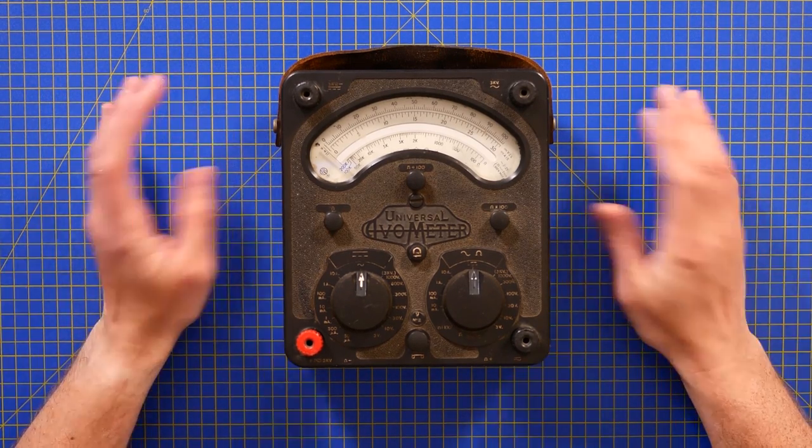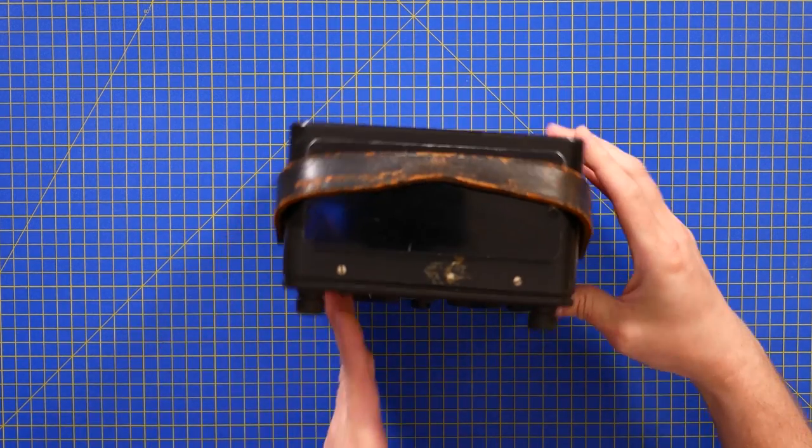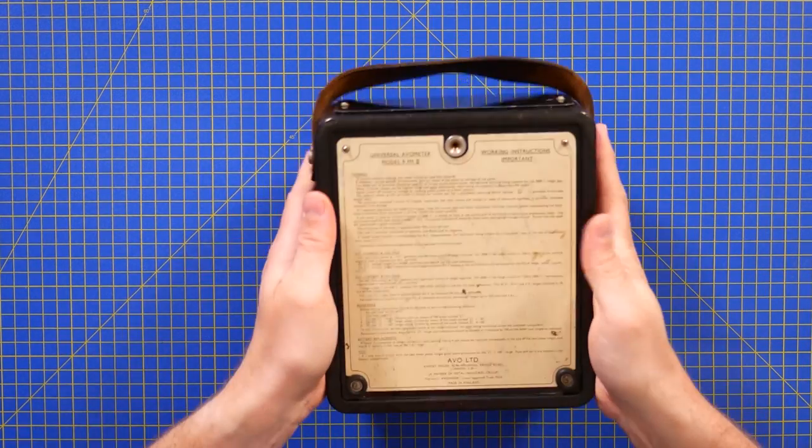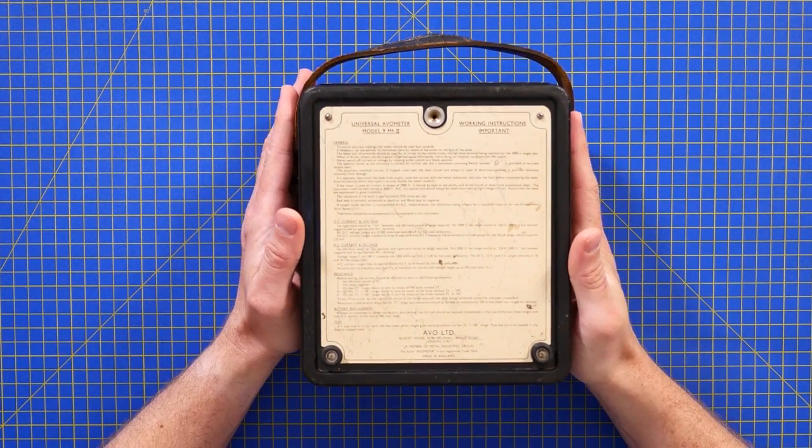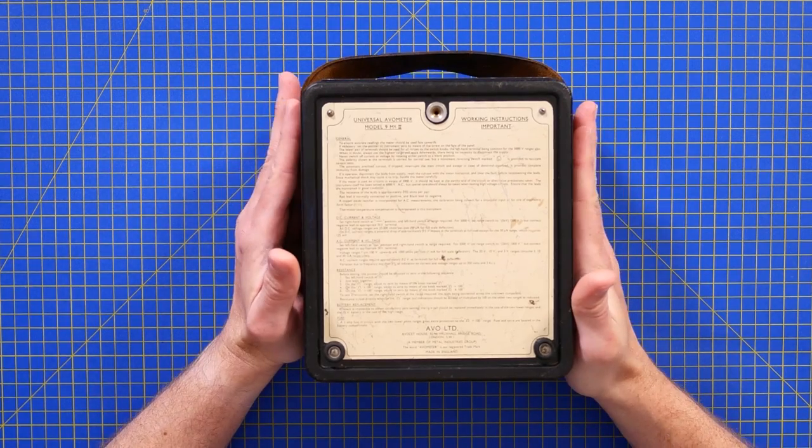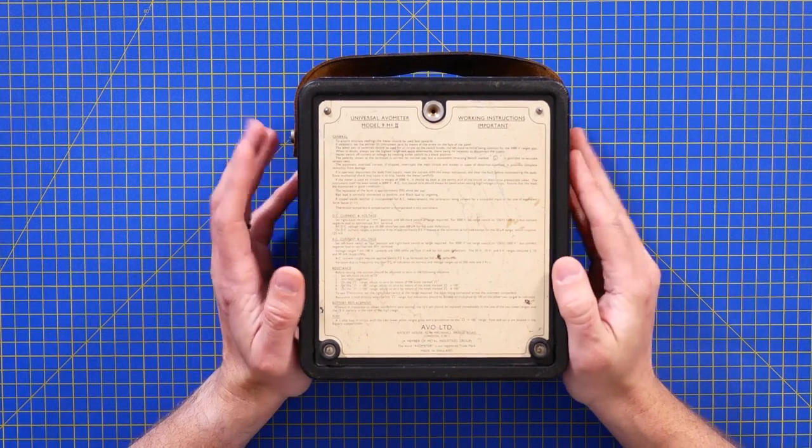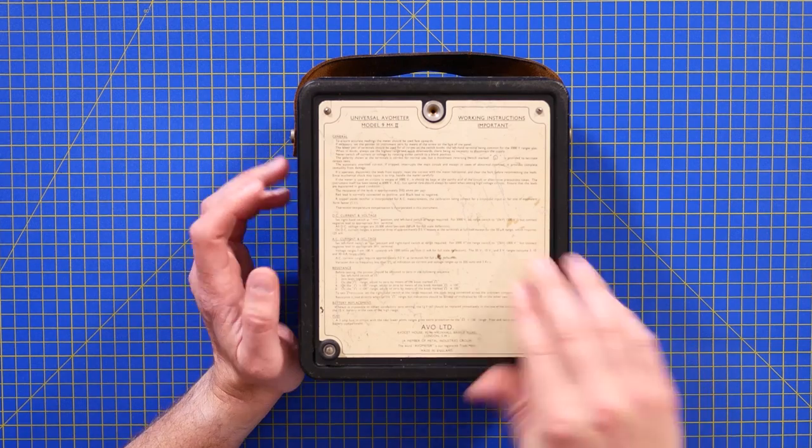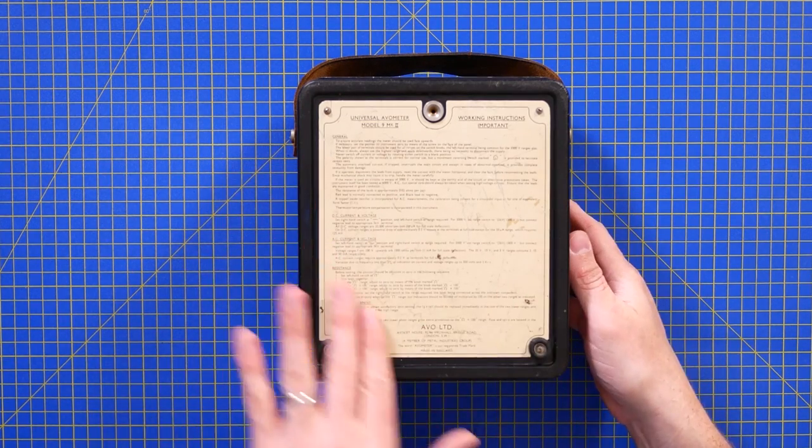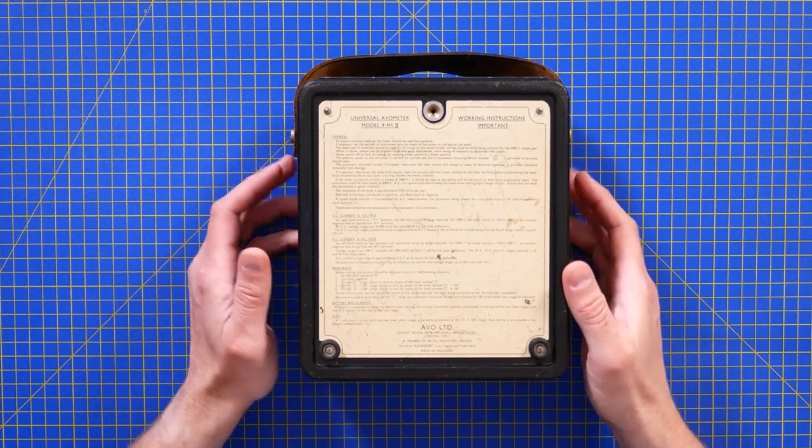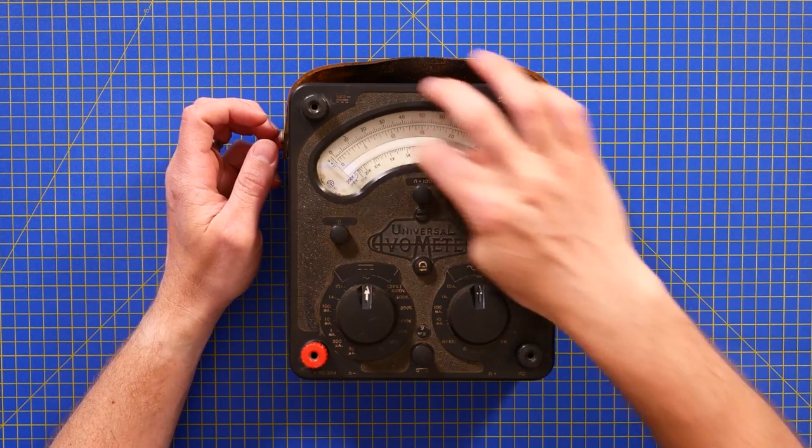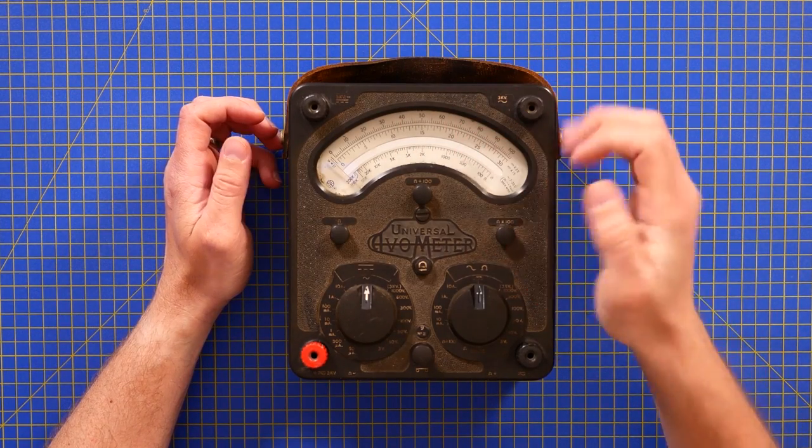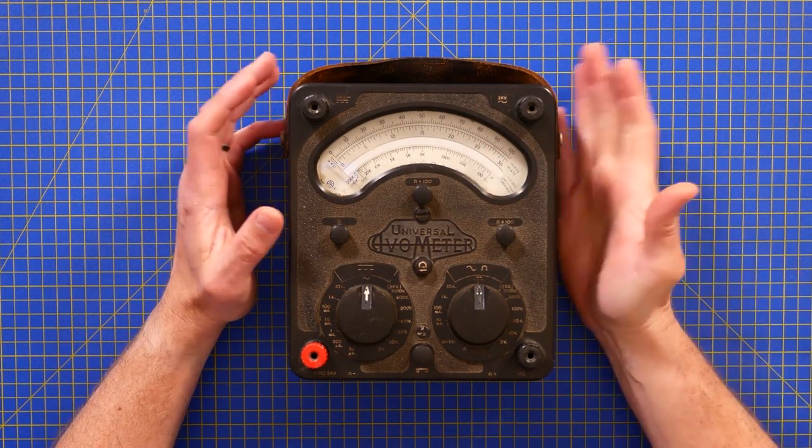Anyway, back to the Model 9. This particular model is a Model 9 Mark II, which I think comes from 1965. So this is another 15 years earlier than the previous one we looked at. And hopefully it's going to be just as interesting. And it is certainly as beautiful.